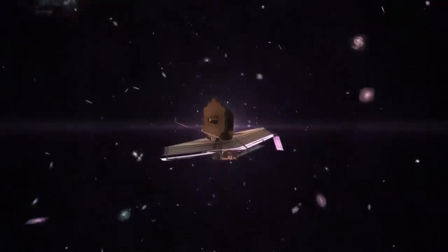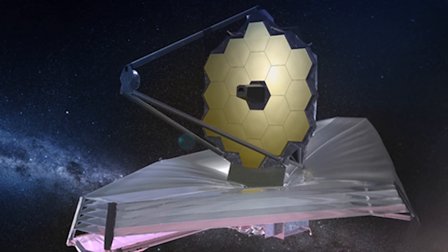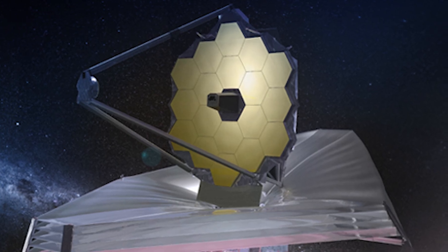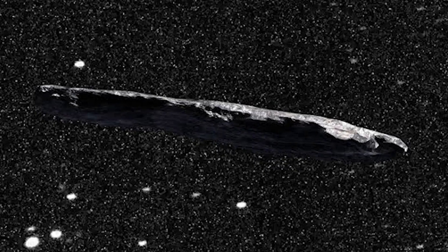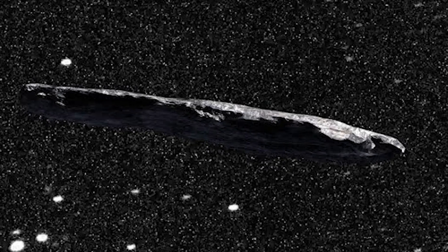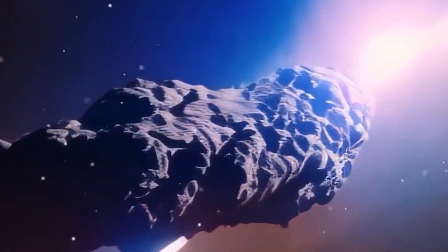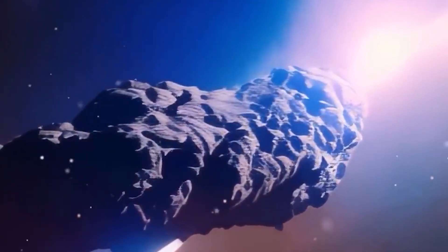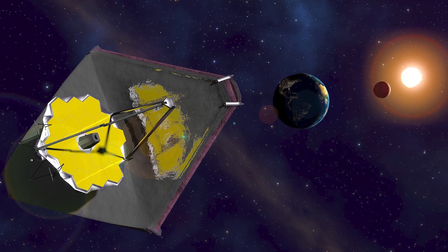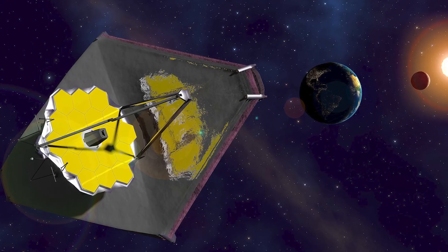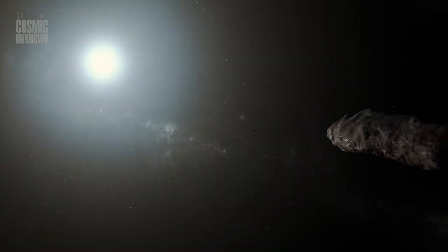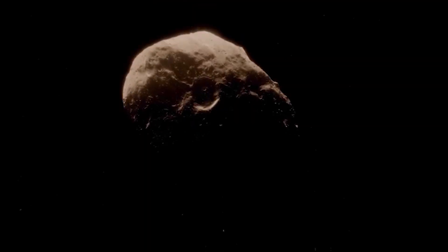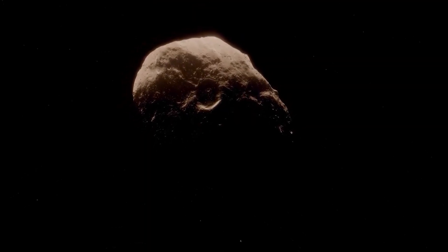Even beyond its immediate scientific yield, the capture of 3I-Atlas has implications for the future of space exploration strategy. If interstellar objects prove to be relatively frequent visitors, they could serve as targets for robotic missions, providing samples from other star systems without requiring interstellar travel. The Webb image is thus not just a snapshot of a distant rock, but a possible roadmap for exploration in the decades ahead. Musk's emphasis on this potential underscores his belief that discoveries like this are stepping stones toward humanity's broader cosmic journey.